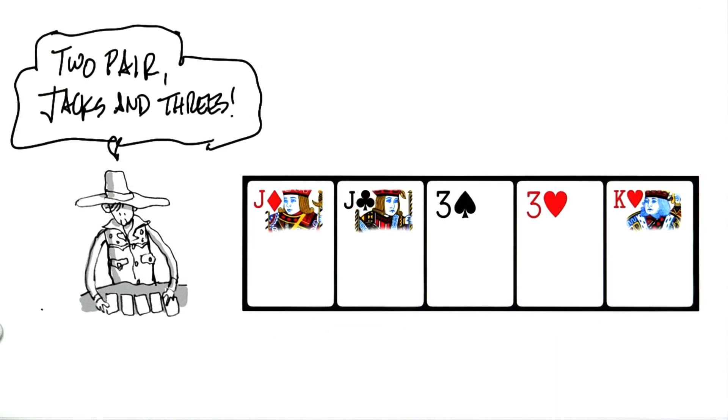Next hand, 2 pairs, jacks and 3s. That describes most of the hand, but we also need to compare all the cards, including the 2 pairs, but it's the highest ranking pair first. First, the 2 meaning 2 pairs, then the 11 for the jack, the highest of the 2 pairs, then the 3 for the 3s.